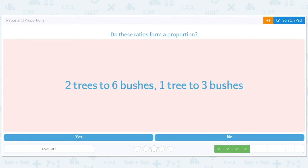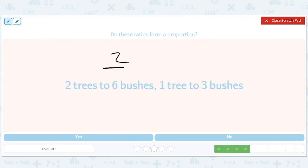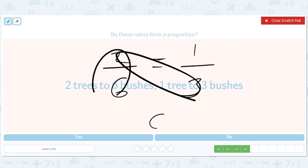Two trees to six bushes equals one tree to three bushes. You guys probably know that these are in proportion. You could simplify this and get one third. But you could also just do the cross multiply thing if you don't want to think. Six, that's equal to six. So they're the same.